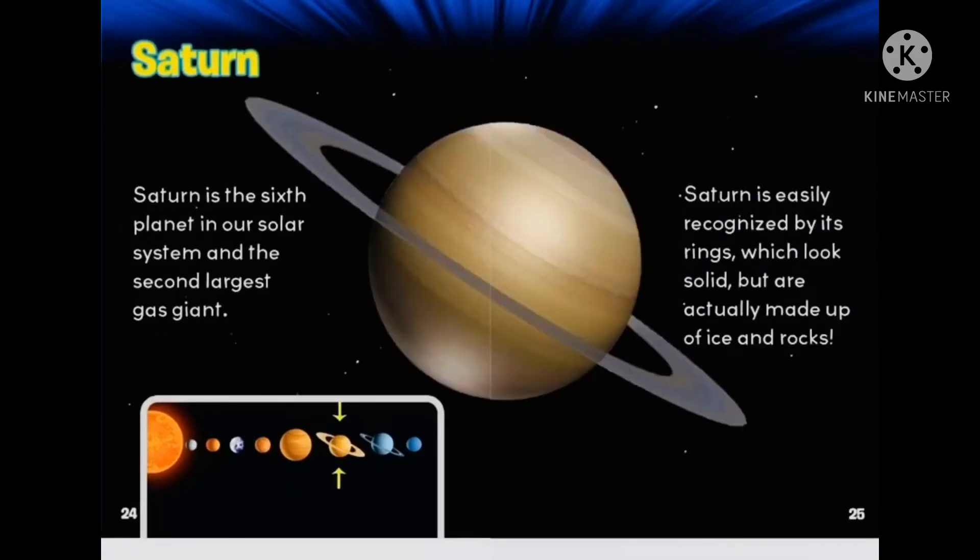Saturn is the sixth planet in our solar system and the second largest gas giant. Saturn is easily recognized by its rings, which look solid but are actually made up of ice and rocks.